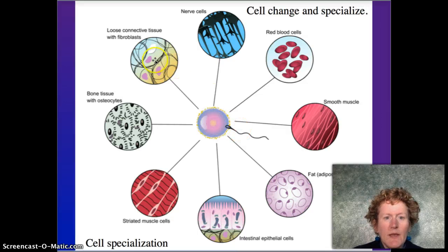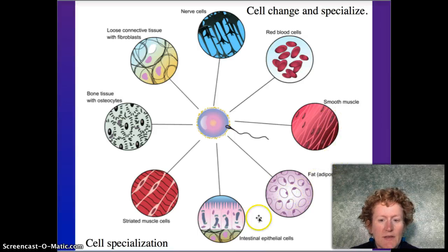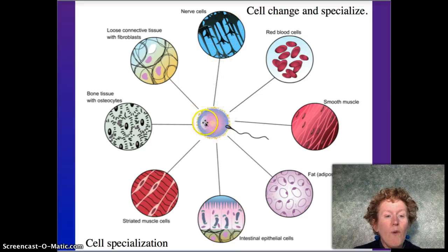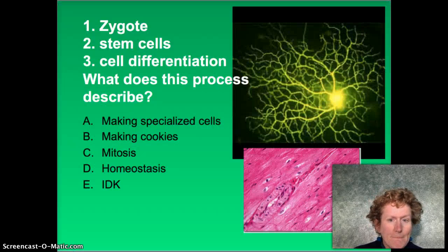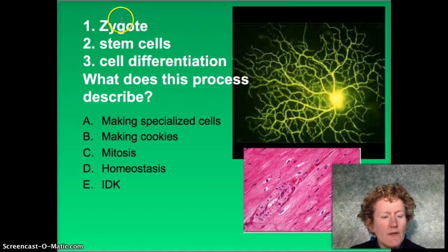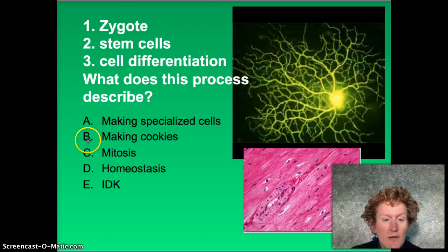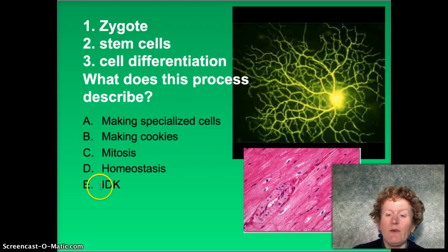From the zygote, all these different kinds of cells — red blood cells, smooth muscle cells, fat cells, intestinal epithelial cells, striated muscle cells, bone tissue, loose connective tissue, and nerve cells — all come from one cell to start. First you have that zygote, that egg and sperm together, then you have stem cells, and then they differentiate into making specialized cells.